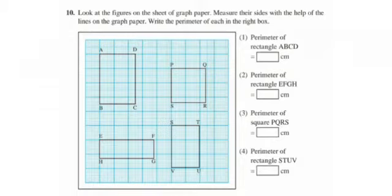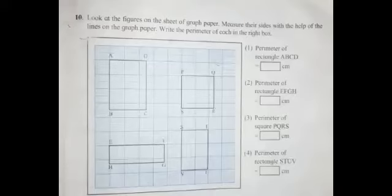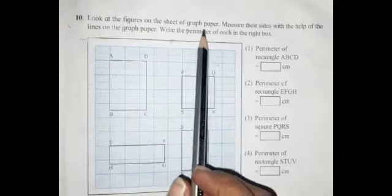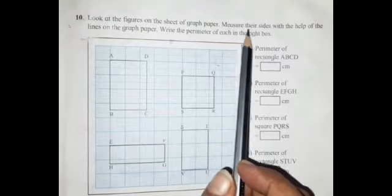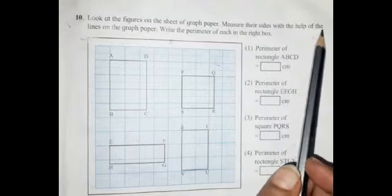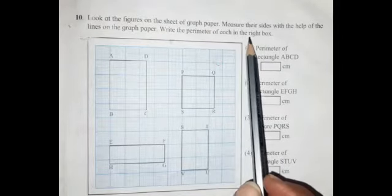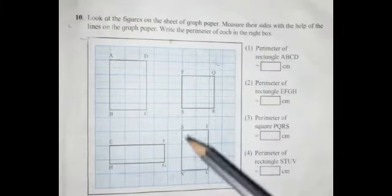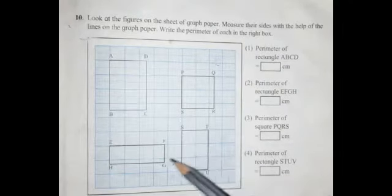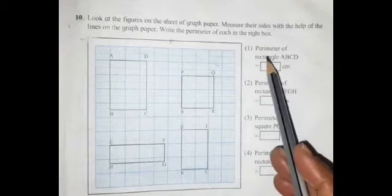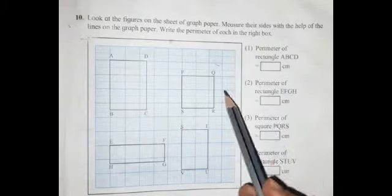Now we will solve question number 10 of Problem Set 49. The question says: locate the figures on the sheet of graph paper, measure their sides with the help of the lines on the graph paper, and write the perimeter of each in the right box. Some figures are given on graph paper and we will write down the perimeter of each figure in these boxes.